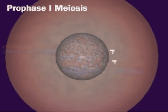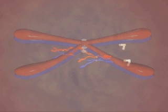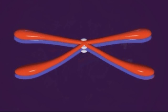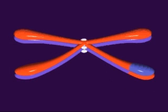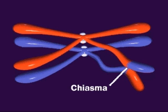During prophase of meiosis I, homologous chromosomes exchange genetic material. The physical manifestation of these exchanges can be seen as chiasmata. The Holliday model describes a mechanism for these recombination events.